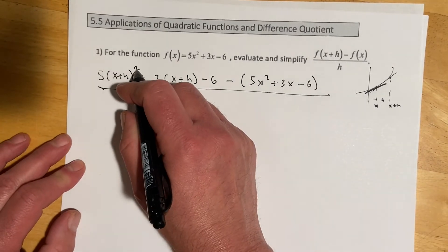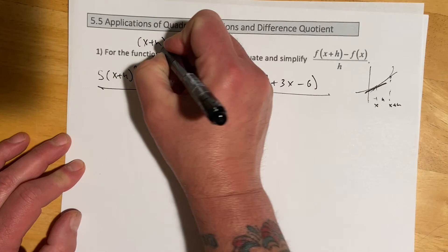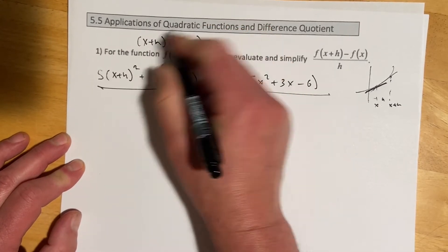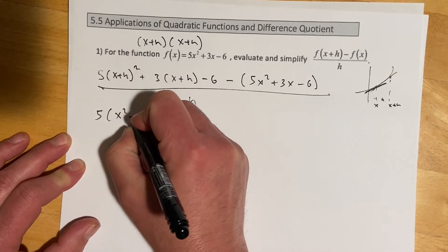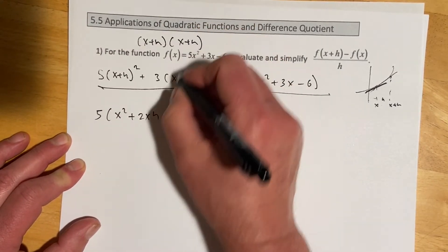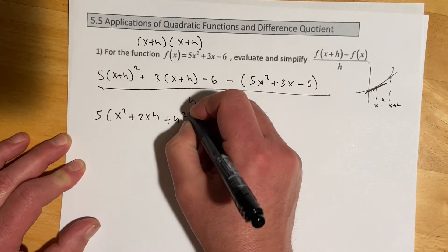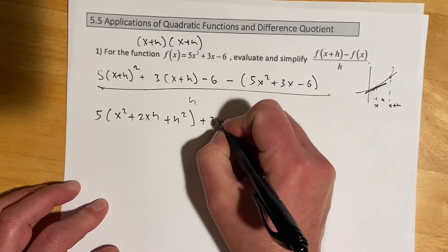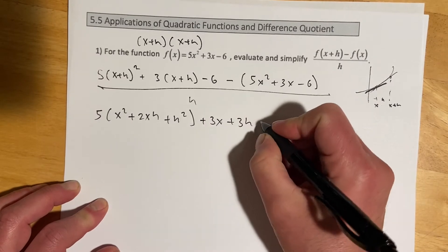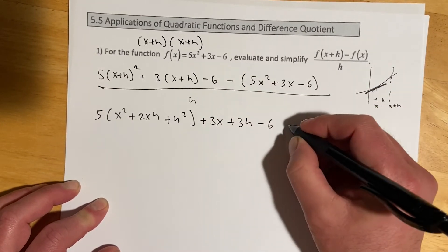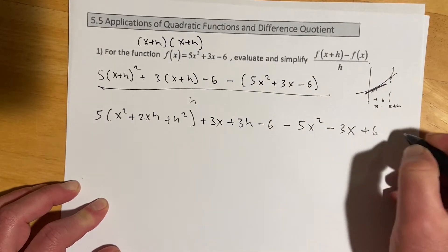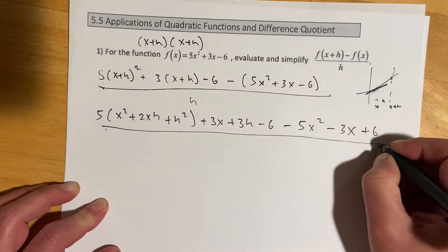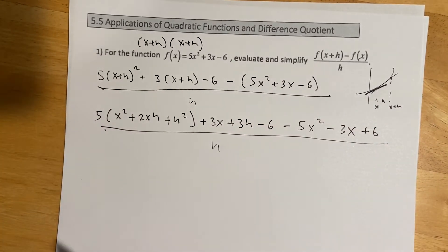Let's expand this out. Remember (x+h) squared is really (x+h)(x+h), so you do a FOIL there and that comes out to 5 times (x squared plus 2xh plus h squared), then plus 3x plus 3h minus 6. Then distribute that negative sign through: minus 5x squared, minus 3x, plus 6. All of that is over h.